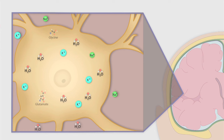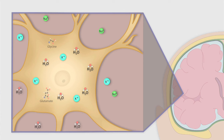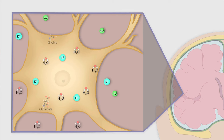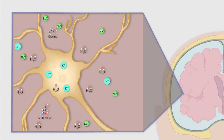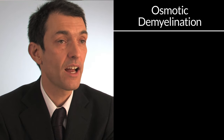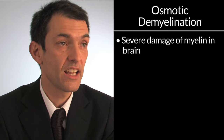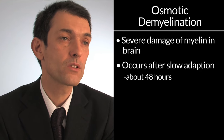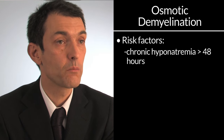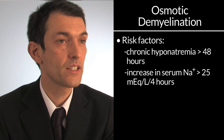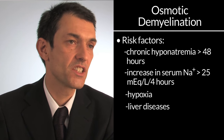Early signs of hyponatremic encephalopathy can progress very rapidly to advanced signs, indicating rapid development of intracranial hypertension and possible brain herniation. The brain compensates with a rapid adaptation involving extrusion of sodium, potassium, and water from brain cells, followed by a slow adaptation involving extrusion of organic osmolytes like glutamate and glycine. If sodium is corrected too rapidly during this slow adaptation phase, it leads to brain shrinkage and osmotic demyelination. Risk factors for osmotic demyelination include chronic hyponatremia lasting more than 48 hours, an increase in serum sodium of more than 25 mEq in 48 hours, hypoxia, liver disease, and malnutrition.